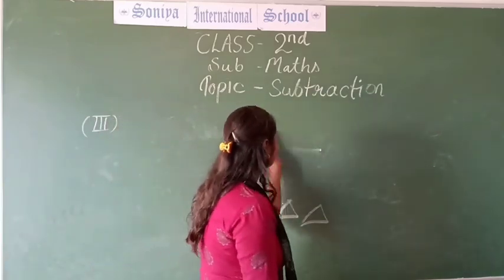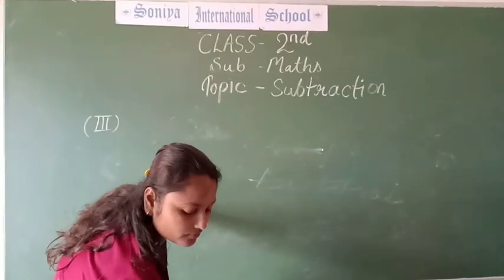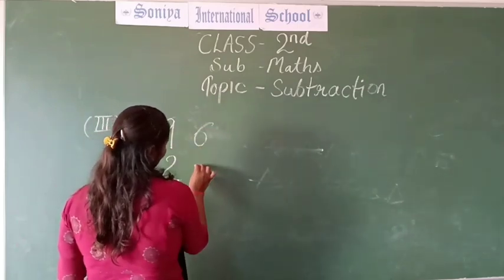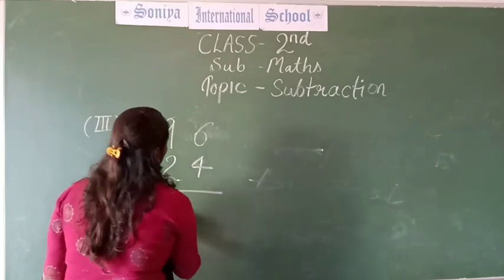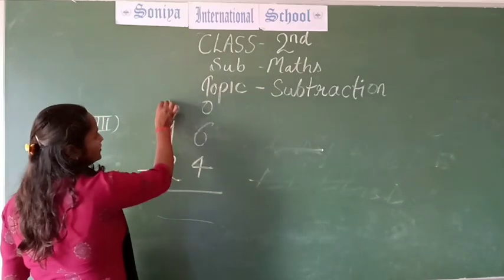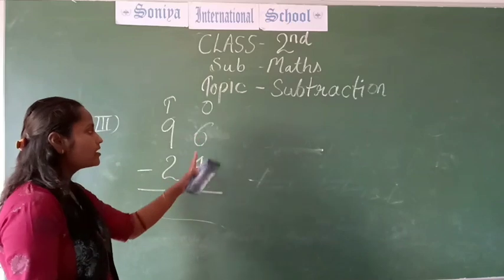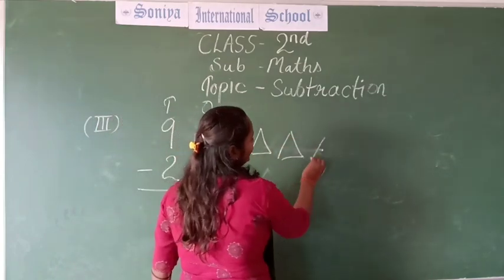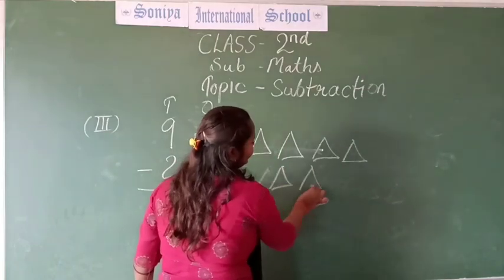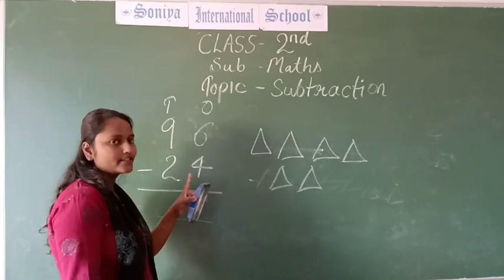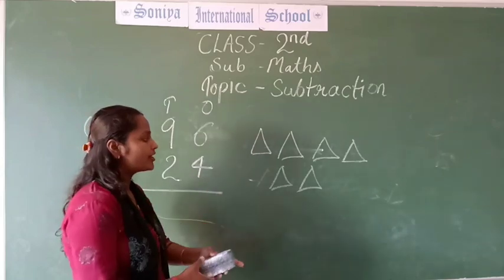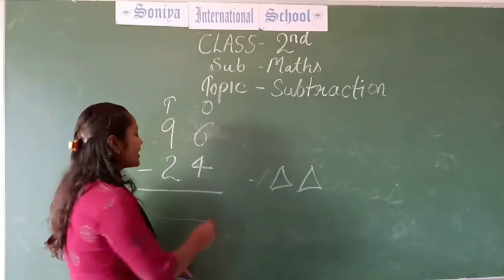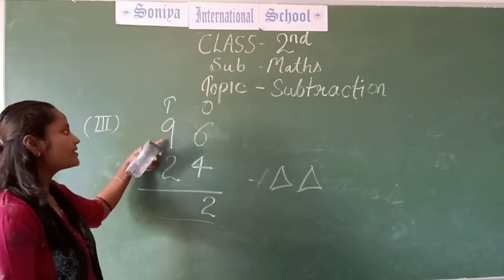Let's see one more example. This is your 1s and this is your 10s. Always remember. This is 6 — it is bigger and this is smaller. So we are making 6 triangles: 1, 2, 3, 4, 5 and 6. And what is this? This is 4. So we are taking away 4 triangles: 1, 2, 3 and 4. These 4 triangles are taken away. How many are remaining? 2 triangles. So we are writing 2 here.